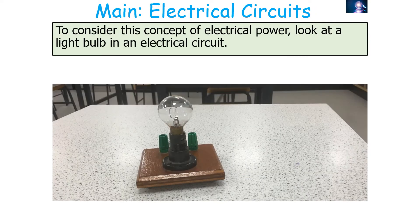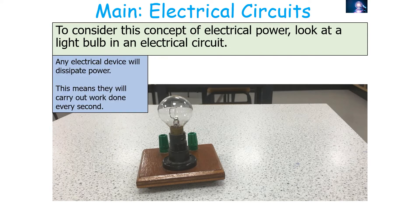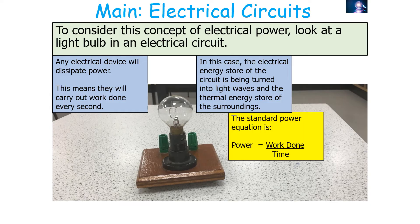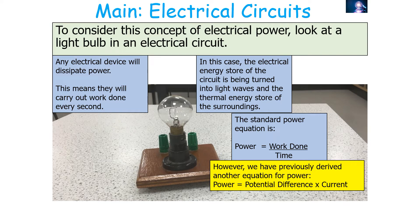To consider the concept of electrical power, think about a light bulb in an electrical circuit. Any electrical device will dissipate power — it performs work done every single second, meaning energy changes store. For a lamp, the electrical energy store of the circuit is converted into light waves and the thermal energy store of the surroundings. The standard equation for power is P = work done / time, but we've now derived P = VI specifically for electrical power.